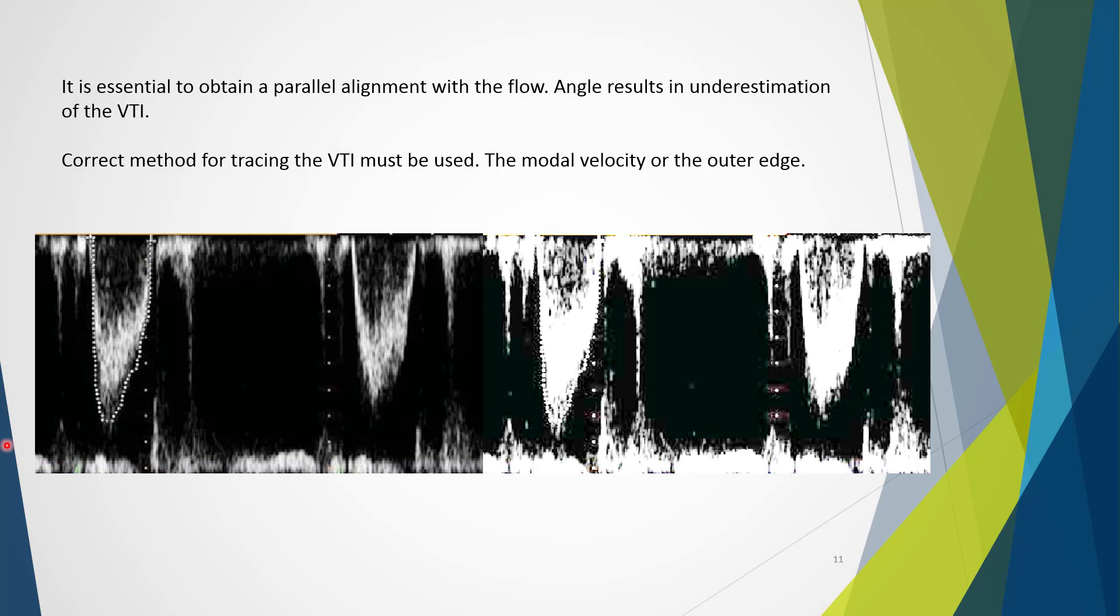Machine settings are also important. If the gain is set too high or too low, the signal may be difficult to view and trace. And we can see that in that second set of views here. This would be very difficult to determine what the modal velocity was if that's what we wanted to actually trace. Additionally, filter settings are quite important, particularly when assessing low velocities. If the filter is too high, there is a large black band that appears on either side of the Doppler baseline. And this may actually obscure what the user actually needs to trace or makes it very difficult to actually bring the trace back down towards the baseline.